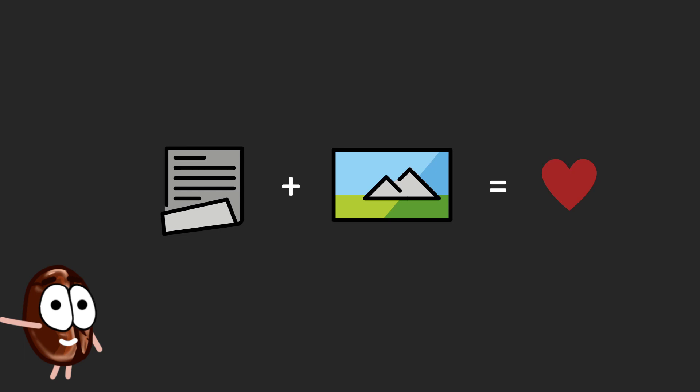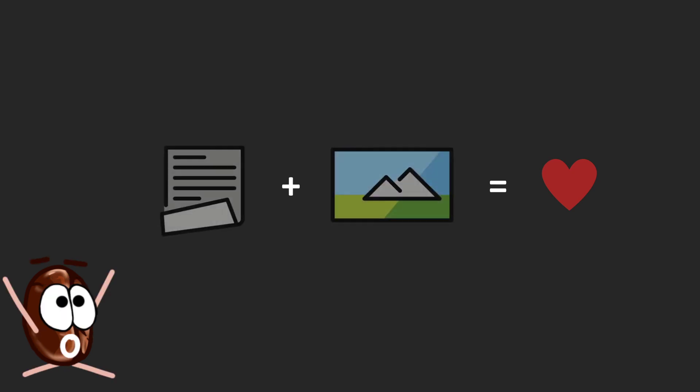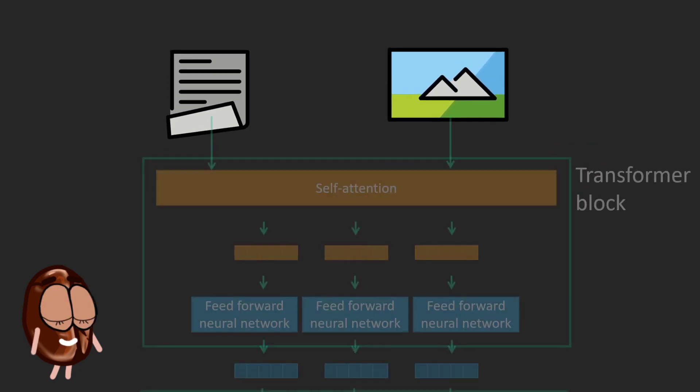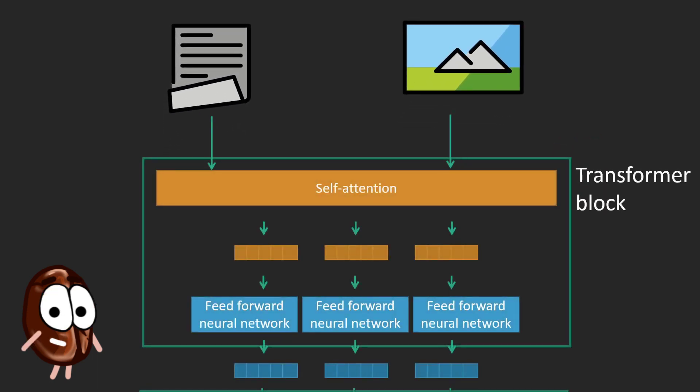What can be even cooler than looking at only text? Well, looking at text and images at the same time. And because we speak about two different input types being processed by a machine learning algorithm, we are here speaking about multimodal learning.